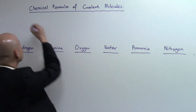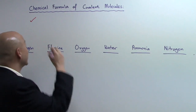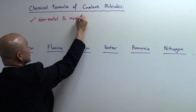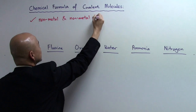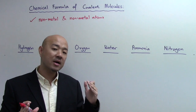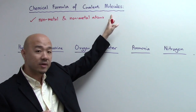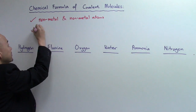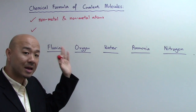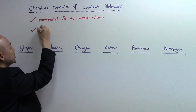Number one: covalent molecules, whether they are elements or compounds, are formed from nonmetal and nonmetal atoms. So you need to go to the periodic table and find out who the nonmetallic elements are — these nonmetallic elements have the chance to come together to form covalent molecules. The second point is that nonmetal and nonmetal atoms come together to form a bond by sharing of electrons.